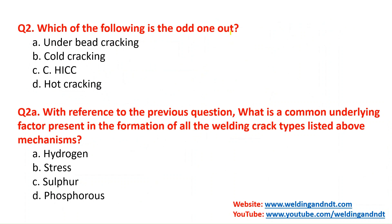Question 2: which of the following is the odd one out? Four options are given and you must choose the one that is not similar to the other three in some respect. Question 2A, with reference to the previous question, asks: what is the common underlying factor in the formation of all the welding crack types listed — what is the common mechanism responsible for these cracks?